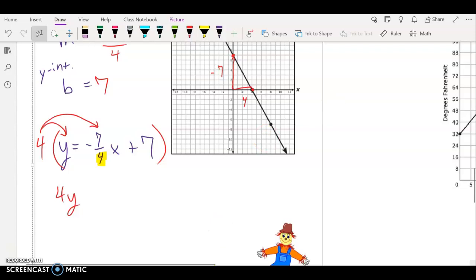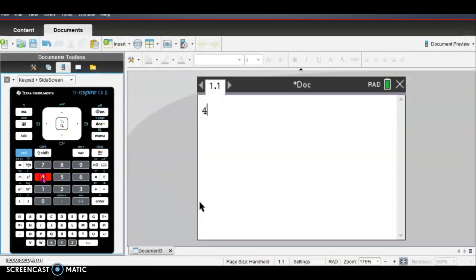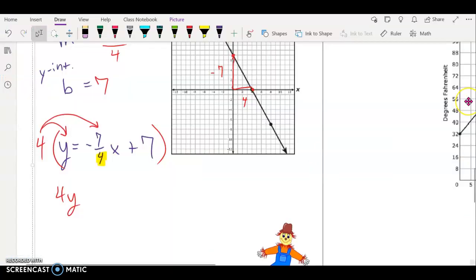So four times y is four y. Four times negative seven fourths - now let's remember we can use our calculator to multiply fractions. I'm going to pull up four times negative, and then control divide makes a fraction, seven fourths. Hit enter, it is negative seven. So let's go ahead and write that down: negative seven. But don't forget to bring down your equal sign, and it is negative seven, but remember there's also an x with it, so it's negative seven x. And then four times seven is 28.